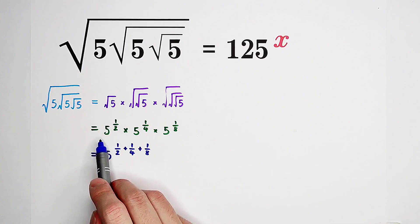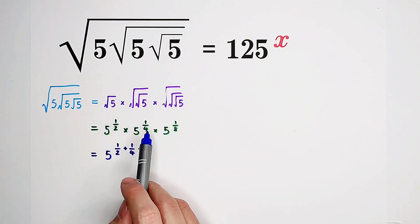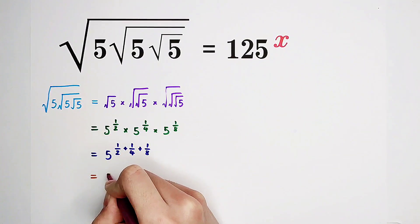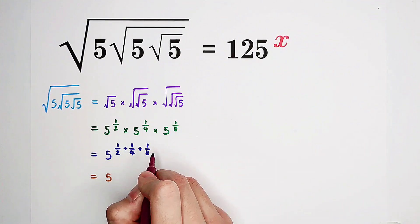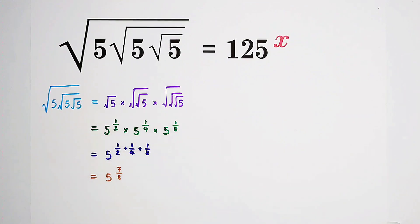According to the formula a to the power of b times a to the power of c equals a to the power of b plus c, it is just 5 to the power of a half plus 1 fourth plus 1 eighth, which is 7 eighths.